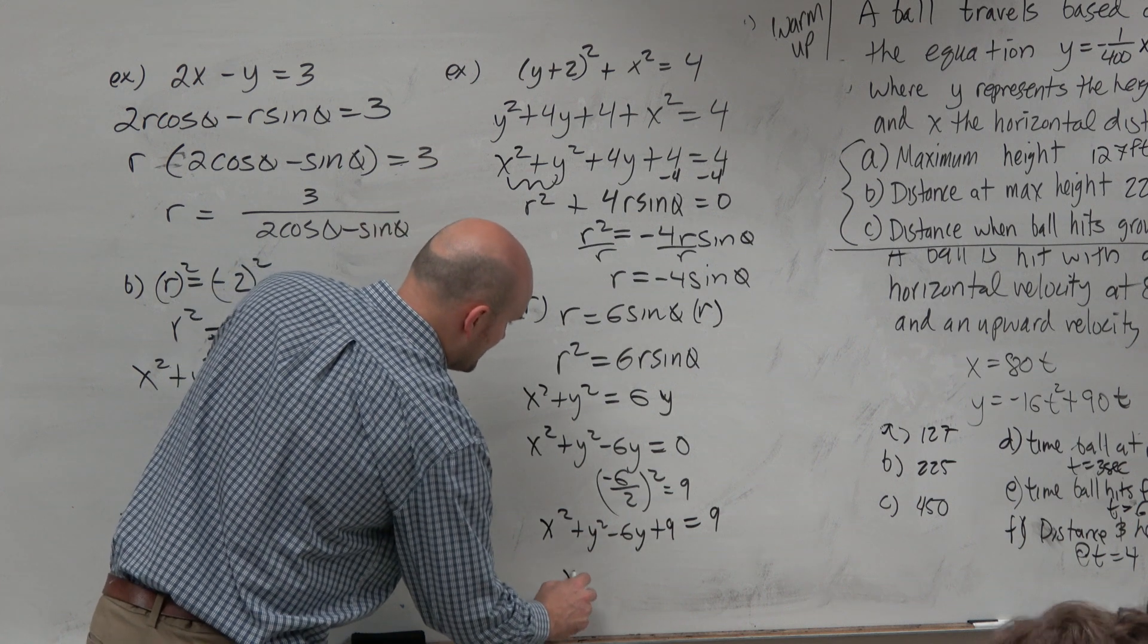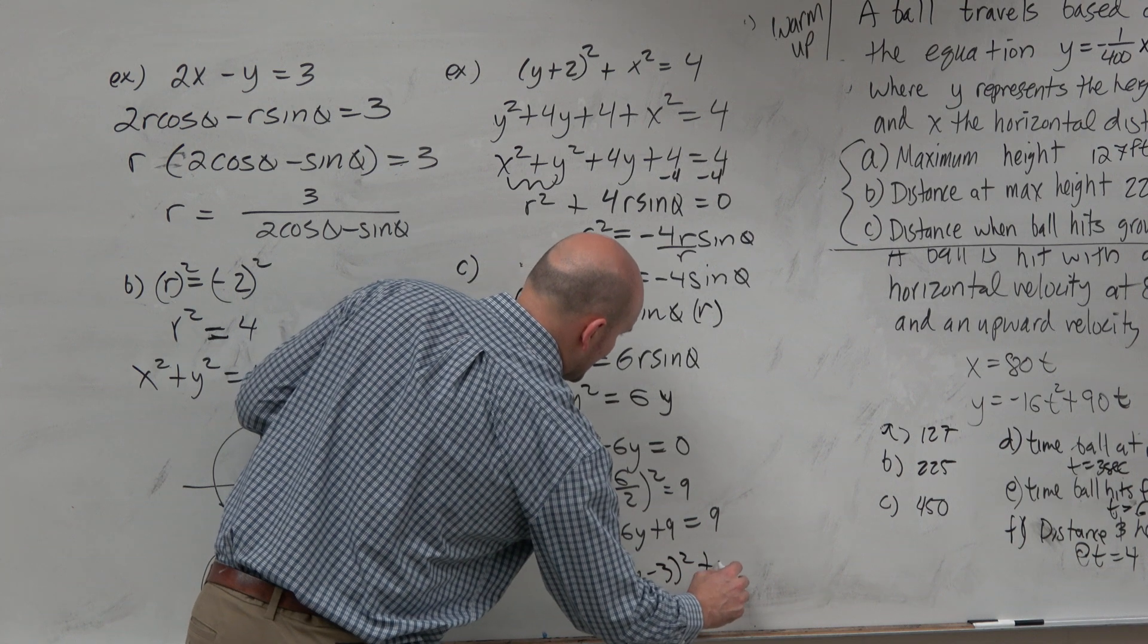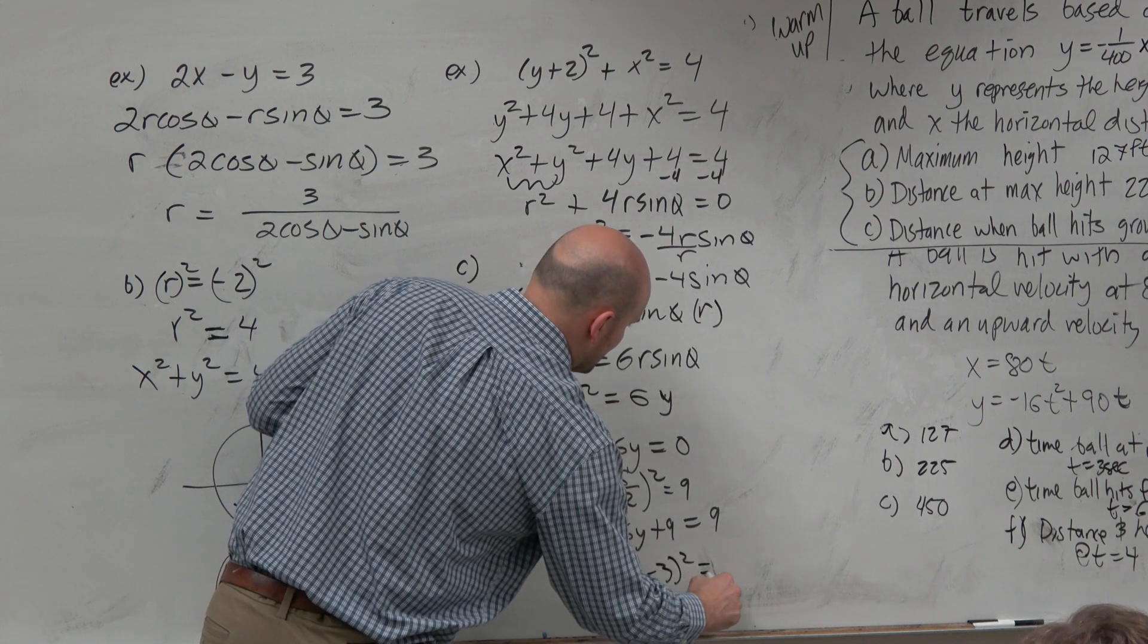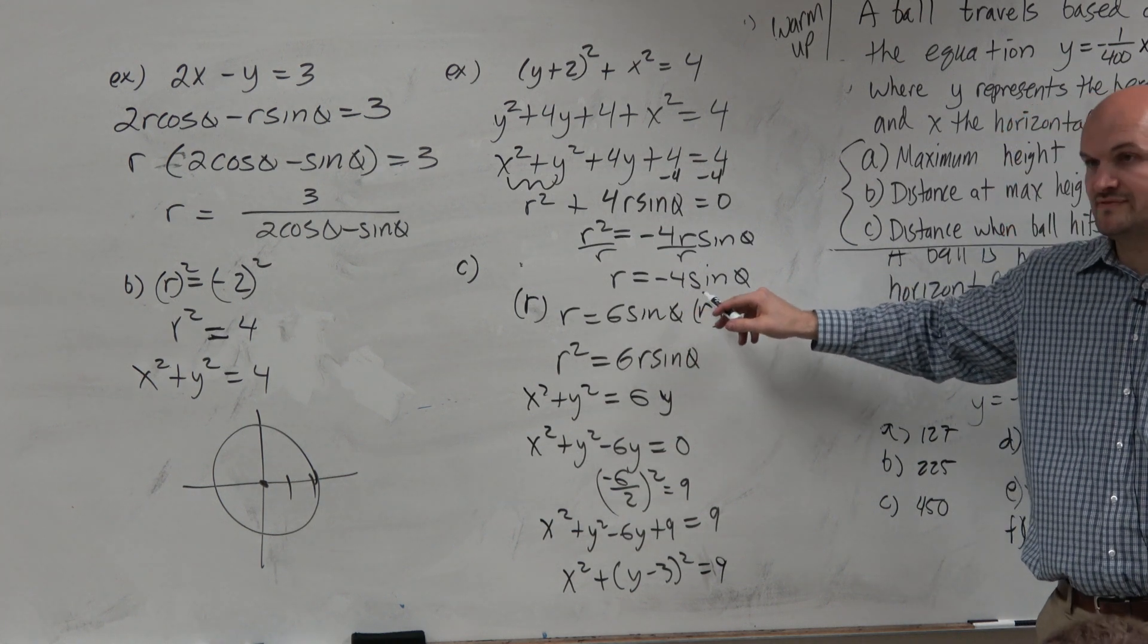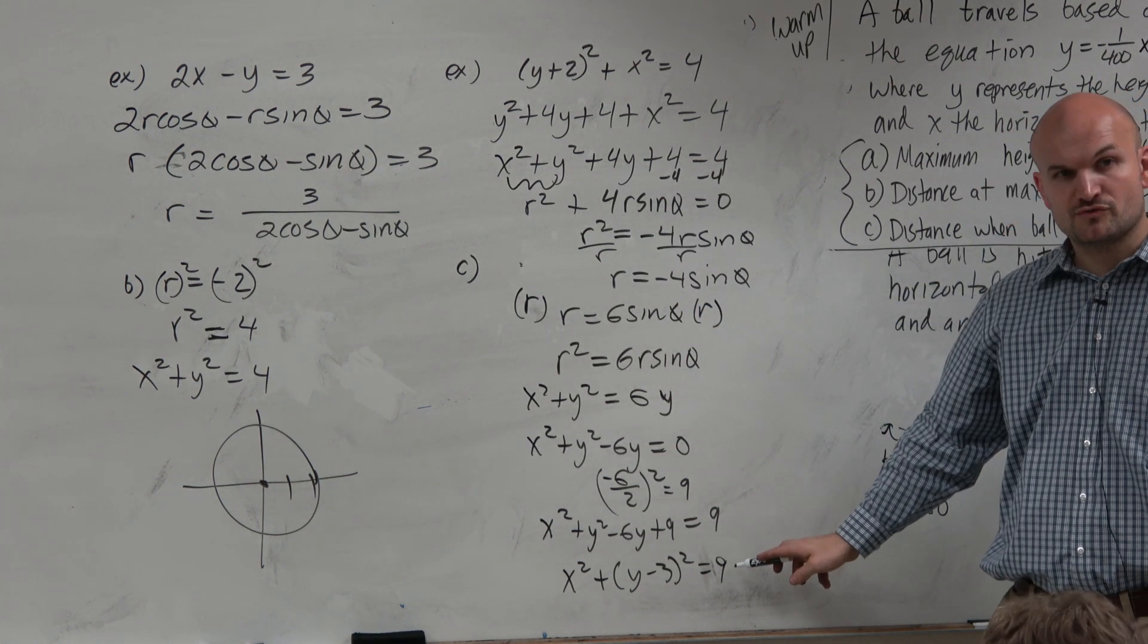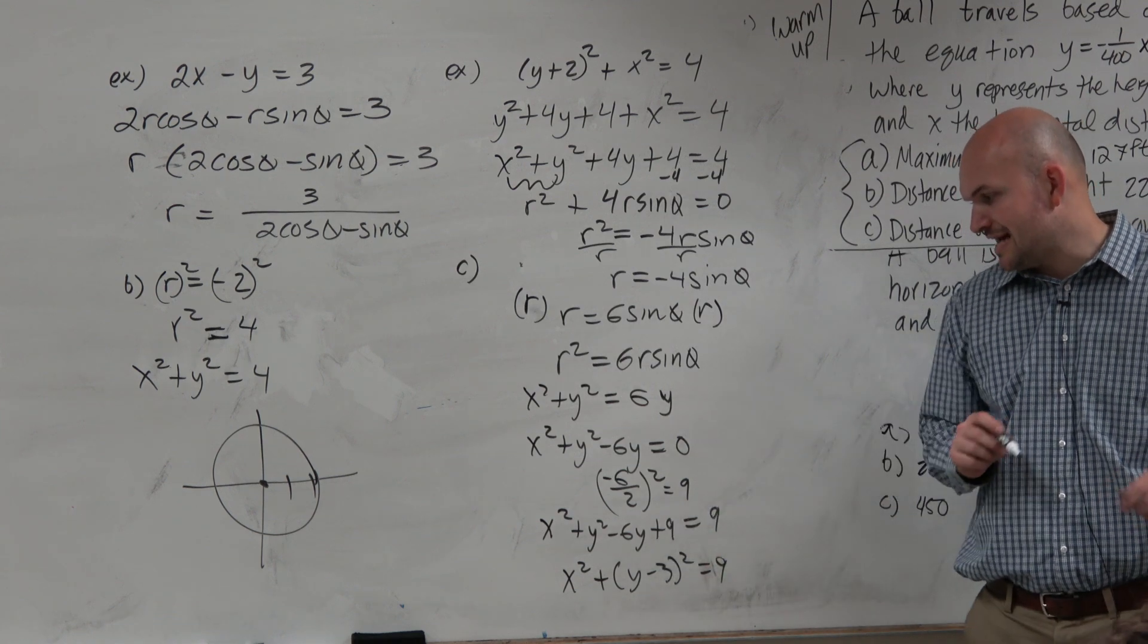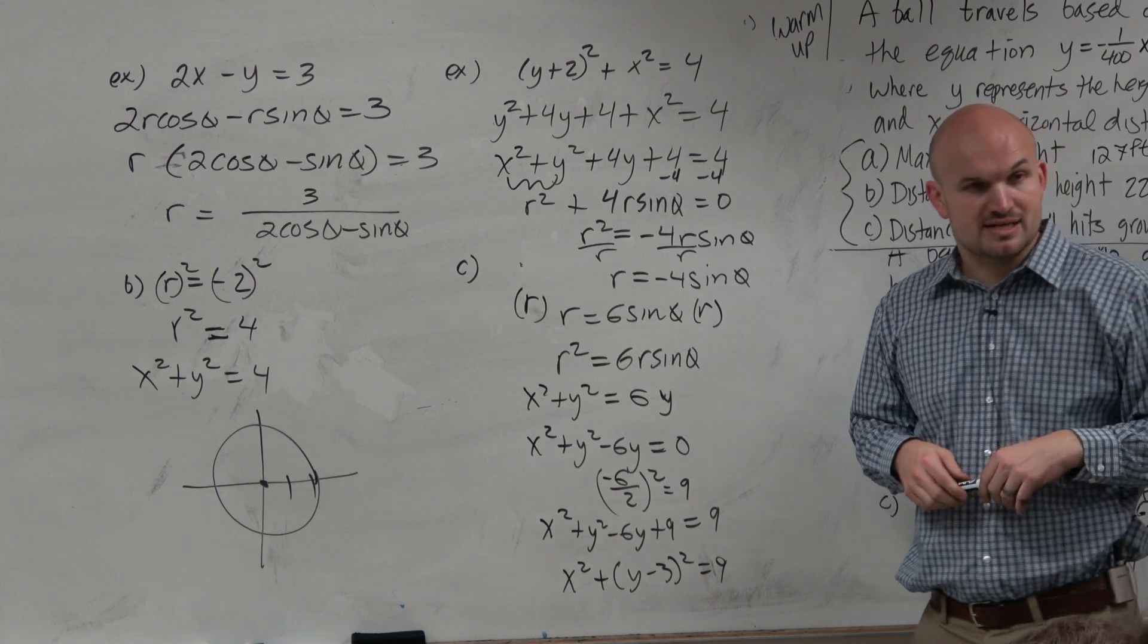That gets condensed into x squared plus y minus 3 squared equals 9. So therefore, if you guys type r equals 6 sine of theta into your calculator, you should get a circle that has a radius of 3 and a center at 0 comma 3. So it should be 3 units off the x-axis.